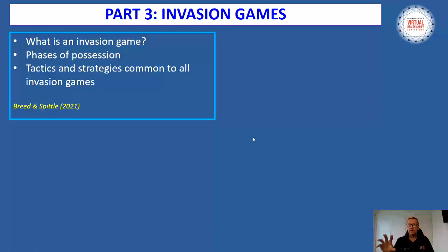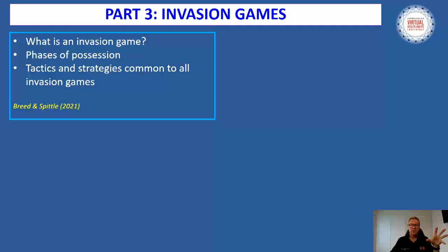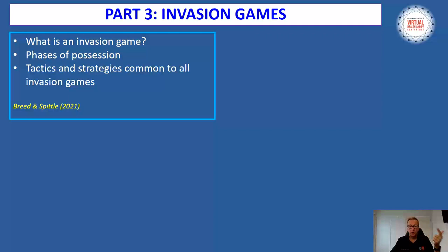Applying all of that pedagogy specifically to invasion games — what is an invasion game? I like to define it as two teams of three or more players where the aim is to score more points than the opponent by propelling — such as throwing, striking, or kicking — an object through a goal or target, or by running the ball over an end zone. The team with the ball invades the opponent's defensive space in order to score, which involves creating space and moving in attack. The team without the ball prevents scoring by occupying or denying that space — hence the term invasion games. There are three distinct phases of possession: in possession (the attacking team), not in possession (the defensive team), and in dispute when the ball is free and no team has control.